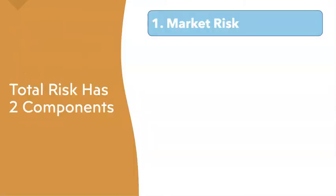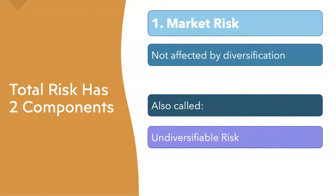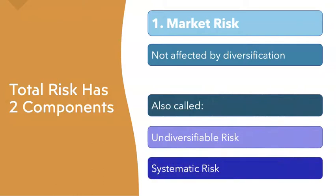First and foremost, we want to break risk down into its two components: market risk and firm-specific risk. Market risk is a risk that you have to live with — it's not affected by diversification. If you're operating in the market, you have to live with market risk. It's also called undiversifiable risk or systematic risk, meaning it's just a part of the system of investing.